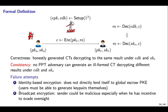One might think the construction of global escrow PKE is trivial, but several attempts fail. For example, IBE does not directly lend itself to global escrow PKE since in PKE users must be able to generate key pairs themselves. Broadcast encryption also fails since in global escrow PKE, senders could be malicious, especially when they have an incentive to evade oversight.